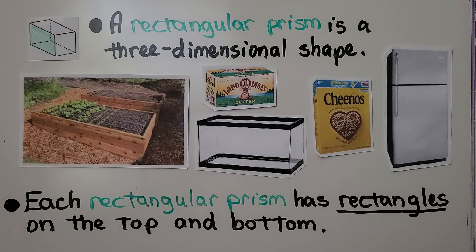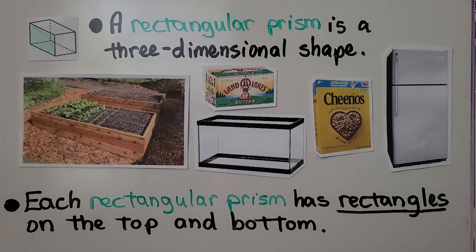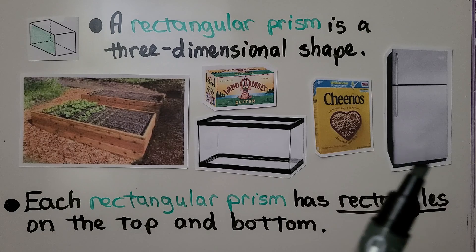So is this box of butter, this fish tank, this box of cereal, and a refrigerator. Each rectangular prism has rectangles on the top and the bottom, or we could say on the sides.